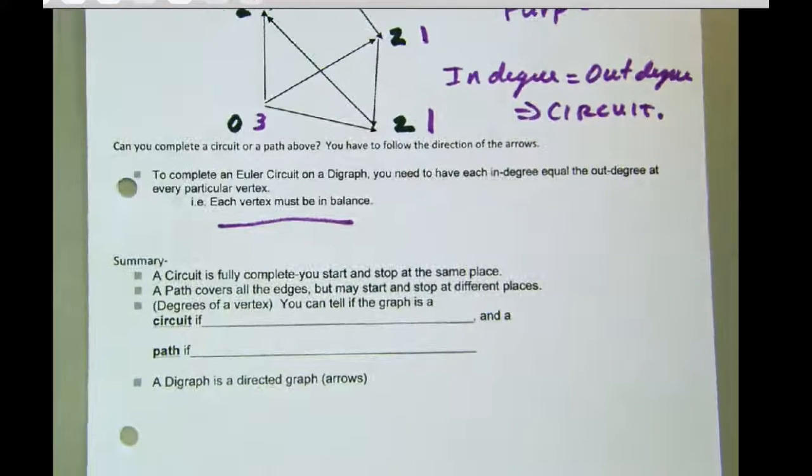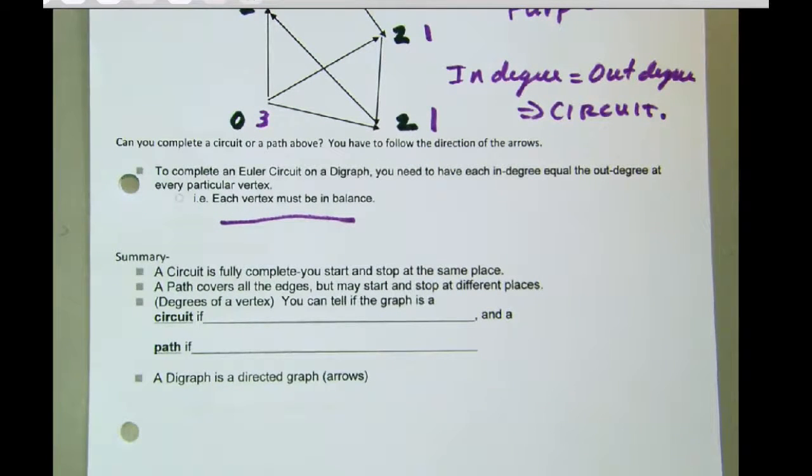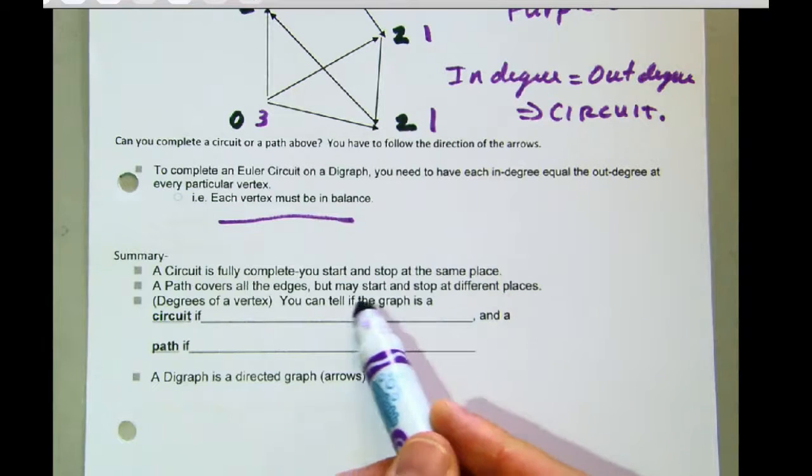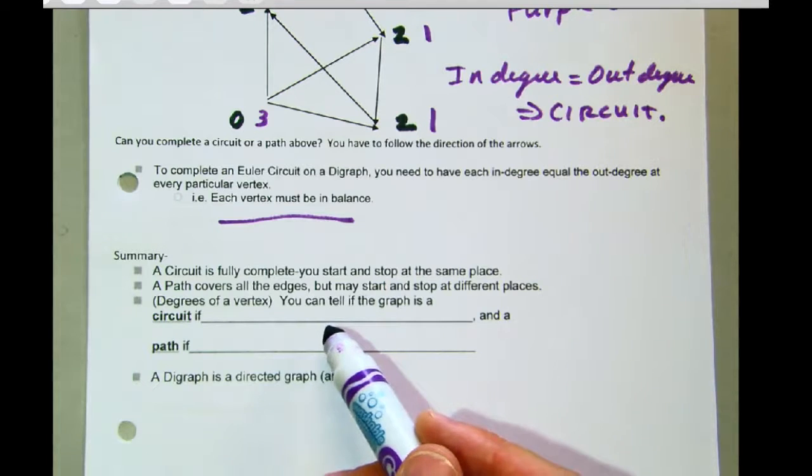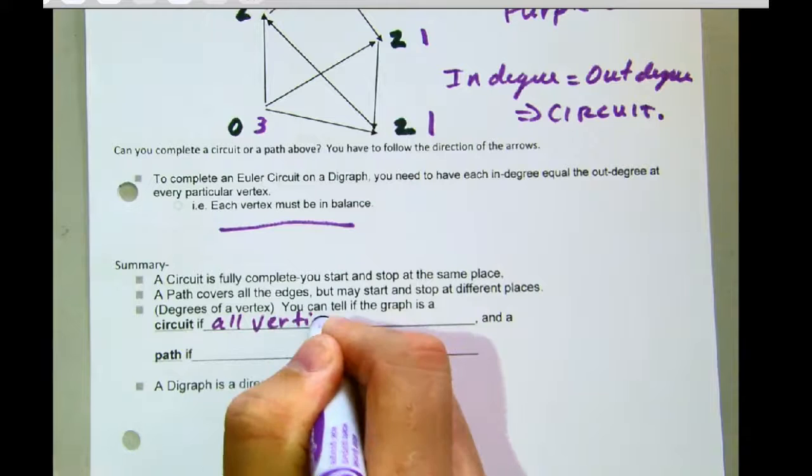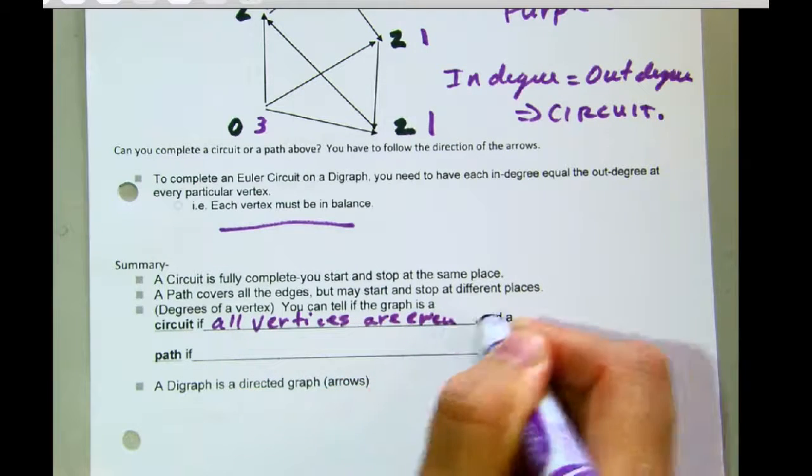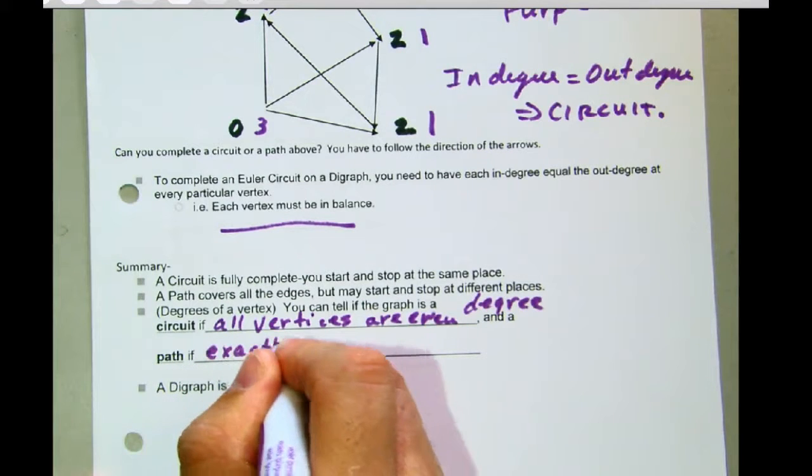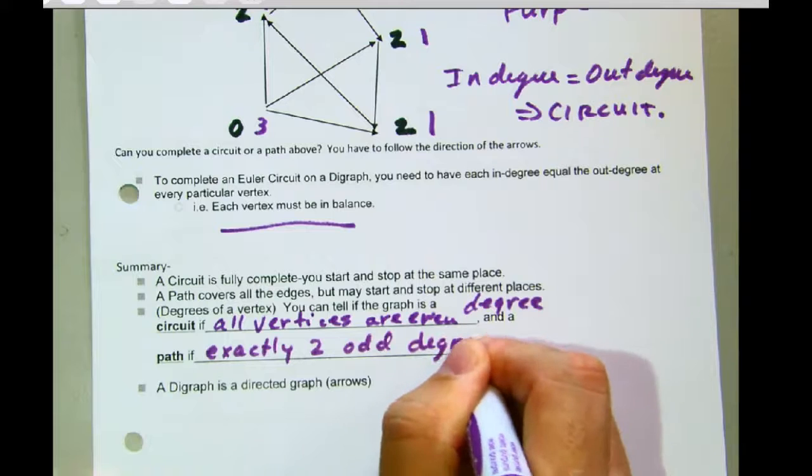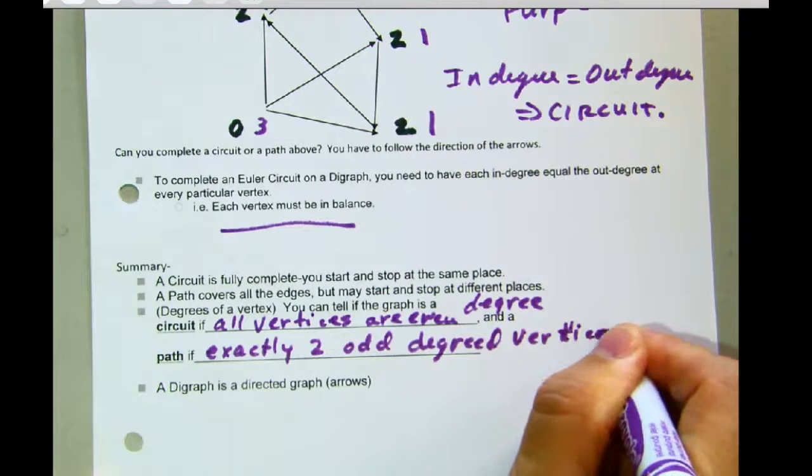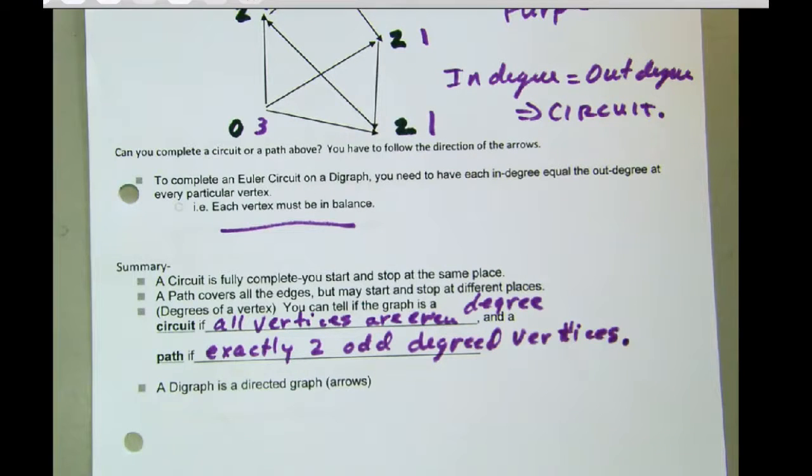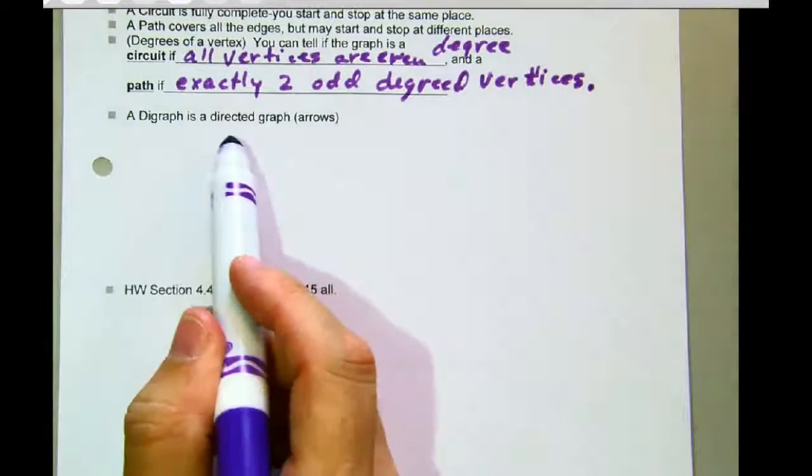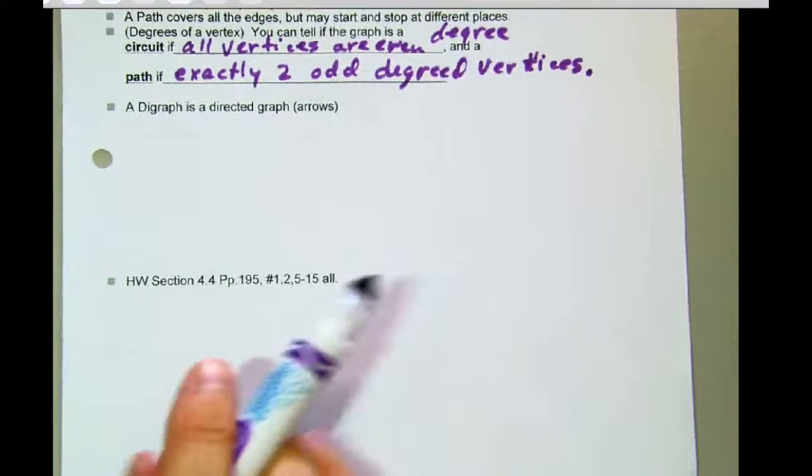Okay? So in summary, a circuit is fully complete. You start and stop at the same place. A path covers all edges, but it may start and stop at different places. Then with the degrees of the vertex, you can tell if the graph is a circuit if all vertices are even degree, and then it's a path if you have exactly two odd degreed vertices. All right? And so then a digraph is your directed graph with arrows. That's all the digraph means. All right. It's just short for directional graph.